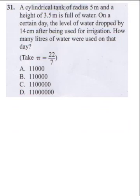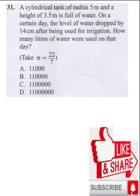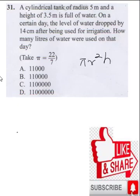A cylindrical tank of radius 5 meters and a height of 3.5 meters is full of water. On a certain day the level of water dropped by 14 cm after being used for irrigation. How many liters of water were used on that day? To solve this you need the formula for the volume of a cylinder.